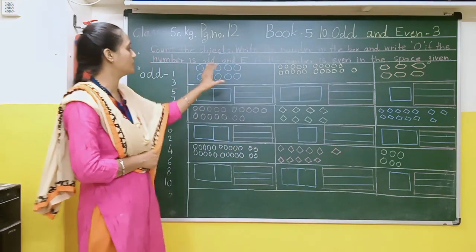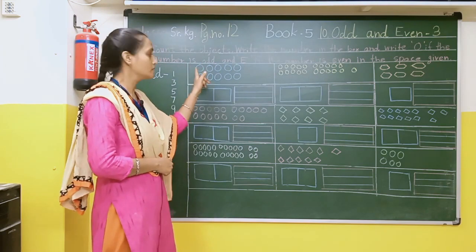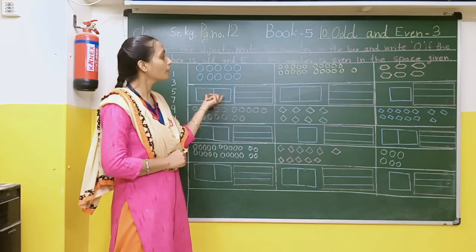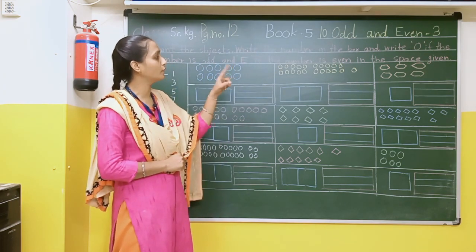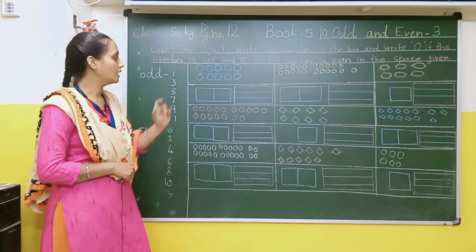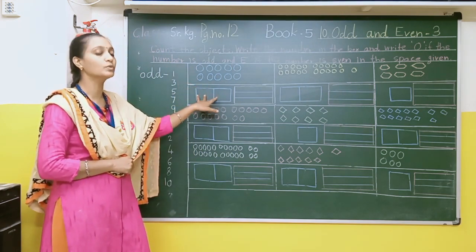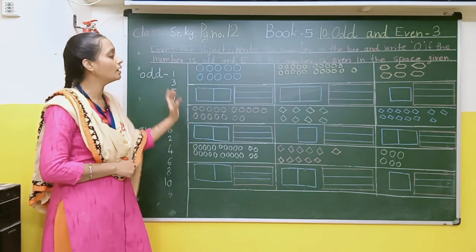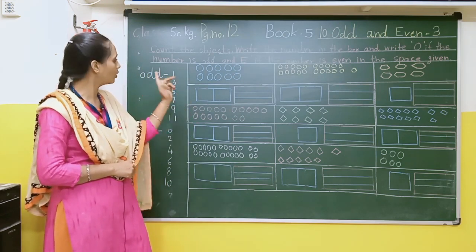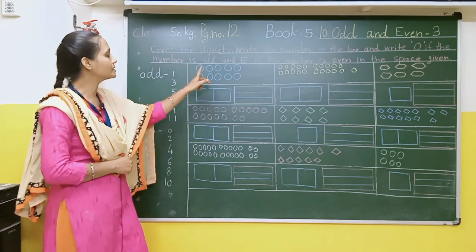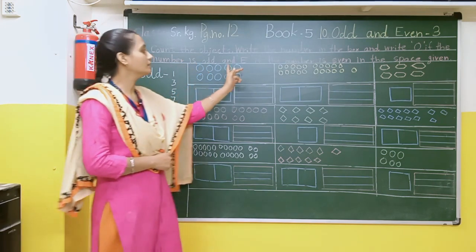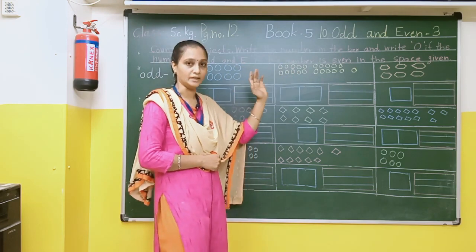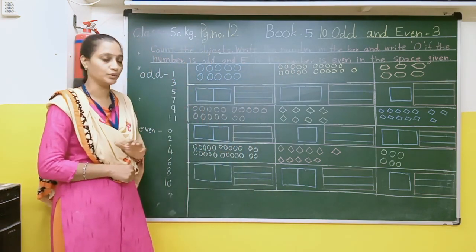First of all, count the objects — the dots, circles — which we have to count first. Write the number in the box and write O if the number is odd. We have to write capital O. And if it comes under even, then we have to write capital E. In this way we have to do this.